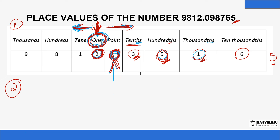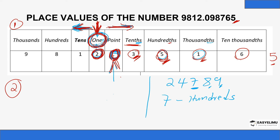In exams or tests, you can be given a number like 24789 and asked to state the place value of a particular digit like seven. For a whole number, start from the farthest right end — ones, tens, hundreds — so seven is in the hundreds position. Or if asked for digit nine, its place value is ones. For digit four, ones, tens, hundreds, thousands — so four is in the thousands position. That is how you answer such questions.